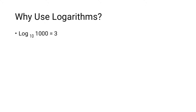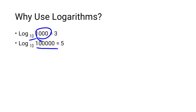Basically, logarithm tells us the power of the base of a given number. For example, here is 1000 and we have to find log to the base 10. It means we want to know how much power makes 10 equal to 1000 — that is 3. Another example: log to the base 10 of 10 to the power 5 — the answer is 5.